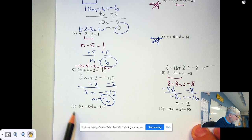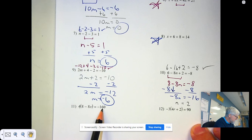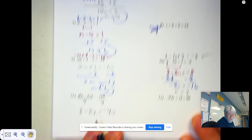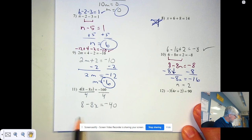When we do number 11, anytime we have parentheses, you're going to want to see if you can divide first. So if I can divide both sides by 4 and get 8 minus 8x equals negative 40. That's a much simpler problem. It's very much like we just did finishing up number 10.